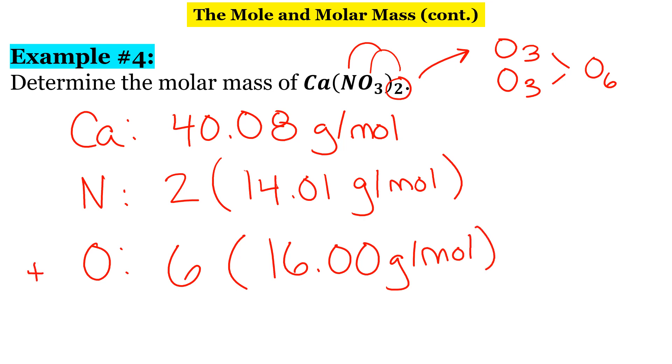So, be careful here, because remember, you need to multiply the molar mass of nitrogen by two, the molar mass of oxygen by six, add everything together, and you should get 164.1 grams per mole.